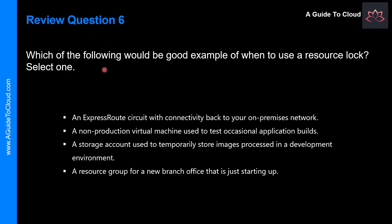Let's look at question number six. Which of the following would be a good example of when to use a resource lock? Select one. We'll go through each statement to find the best scenario. A resource group for a new branch office just starting up — you don't need a resource lock there, it's not even relevant. A storage account used to temporarily store images processed in a development environment — absolutely not, it's a development environment and a temporary store, so it's not a critical resource.